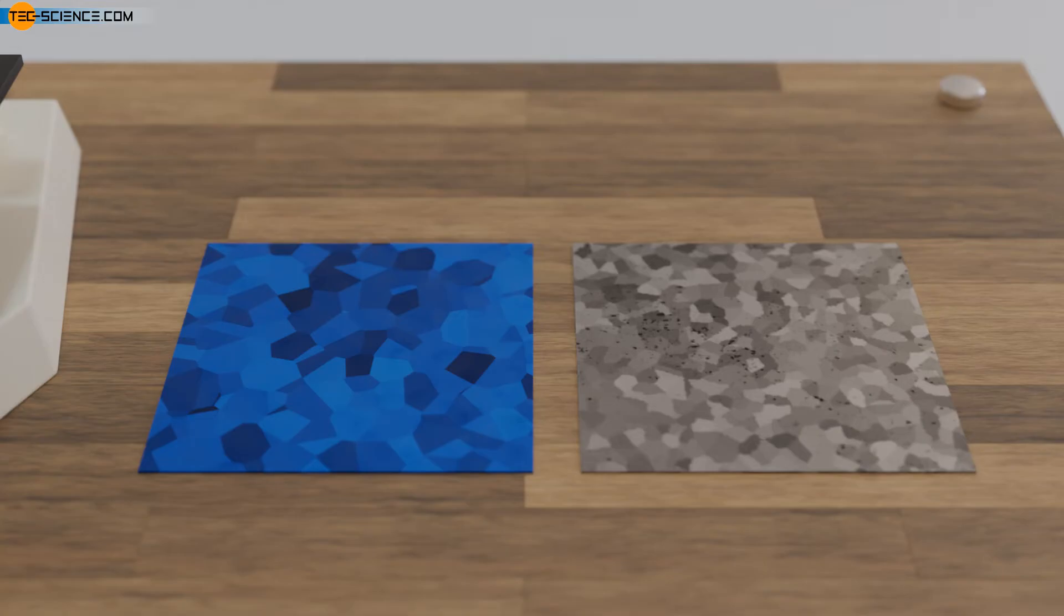Note that the grain boundaries on the surface of a metal or in the micrograph are always shown in section. In fact, however, they are planar structures that enclose a three-dimensional grain like a bubble. Grain boundaries therefore belong to the group of planar defects.